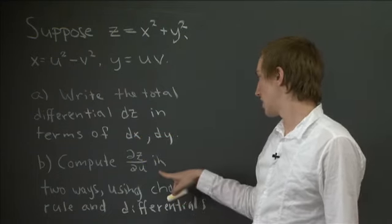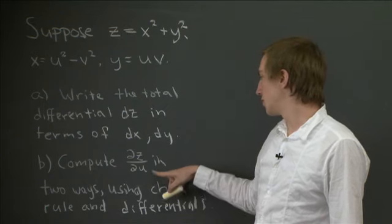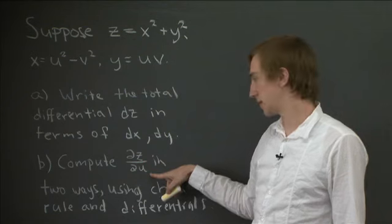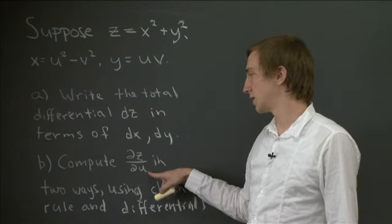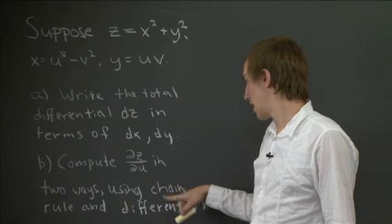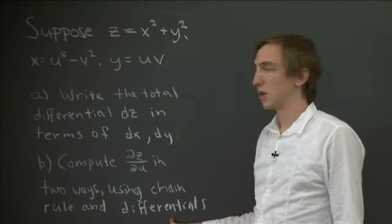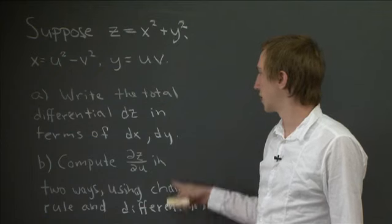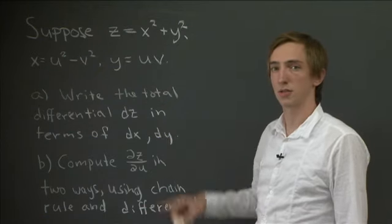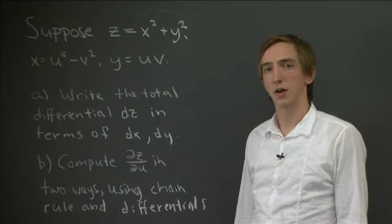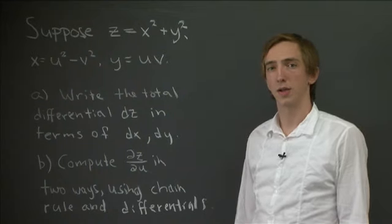And then in part b, we're going to compute the partial derivative ∂z/∂u in two different ways. First, we're going to compute it using the chain rule, and then we're going to compute it using total differentials. So we'll substitute in some of the work that we had in A to solve that part. So why don't you pause the video now and work on the problem.